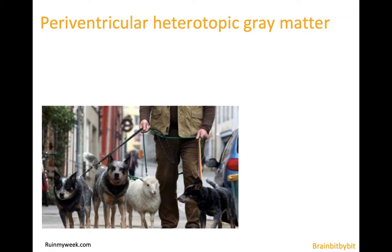In this brain, bit by bit, I will show images of heterotopic gray matter, which is a malformation of cortical development that can be associated with epilepsy, but not always. Literally, heterotopia means that the gray matter is at another place or out of place than usual, like this sheep between the dogs.